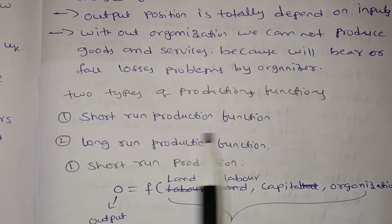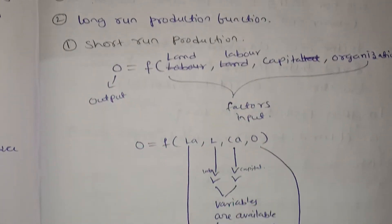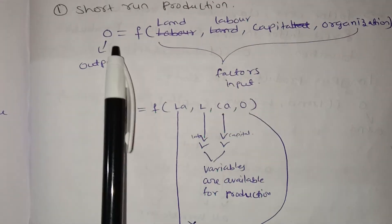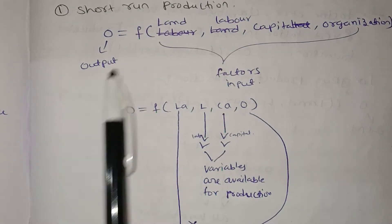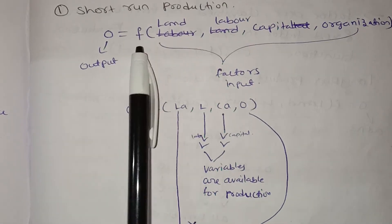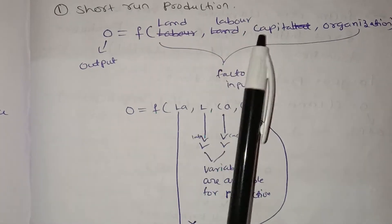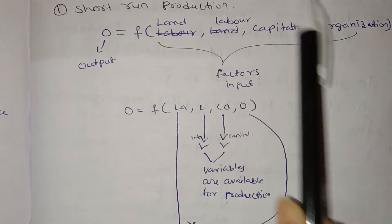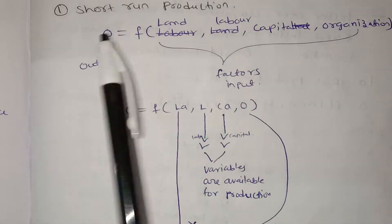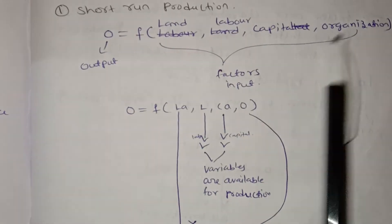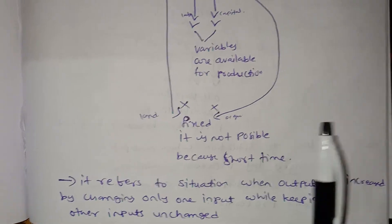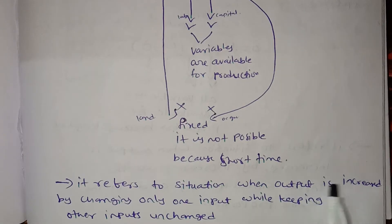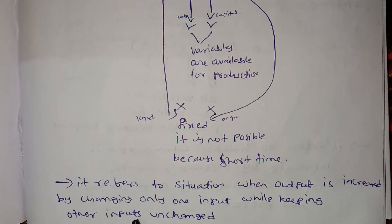First, the short-run production function. In the short run, output — meaning products, final goods — is produced using factors, which are inputs: land, labor, capital, and organization. It refers to the situation when output is increased by changing only one input while keeping other inputs fixed.